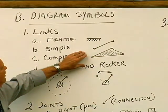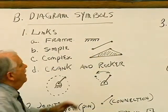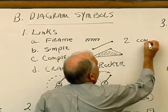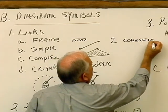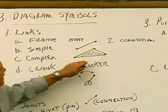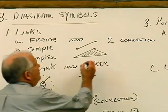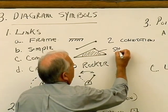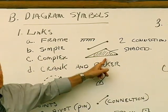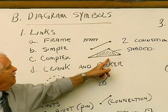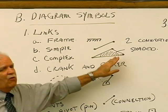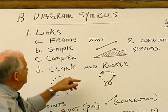The second is the simple link, which just has two connections — two points. The complex link has more than two; in this case I've represented three points, and it is also shaded. You don't need to represent the exact shape of a link — all you need to do is show some kind of simple form with the proper connections on it.